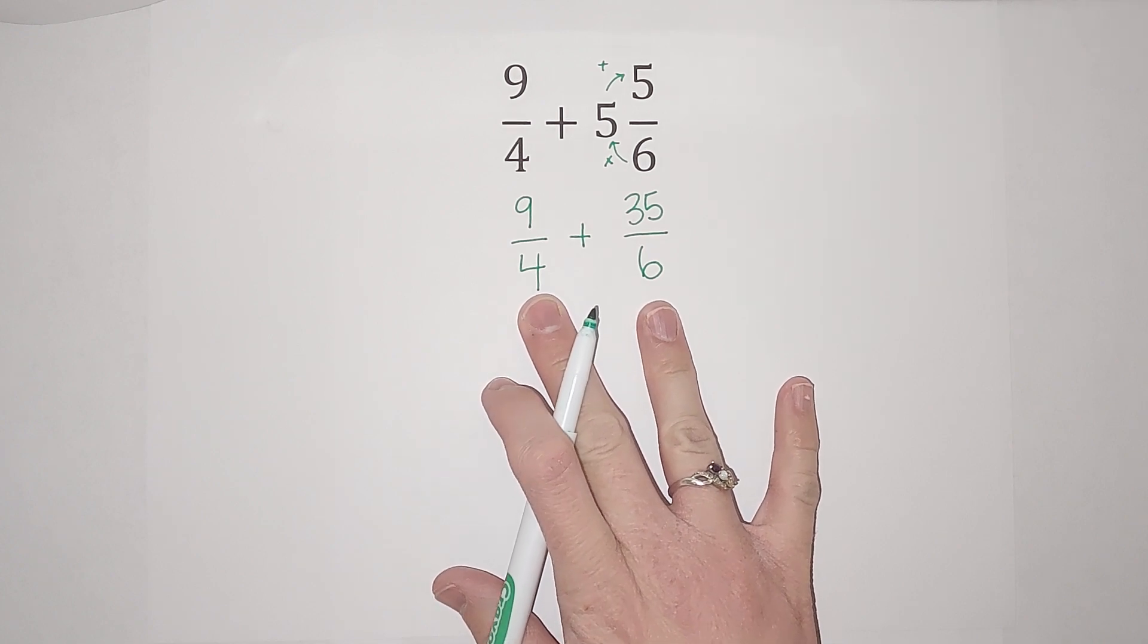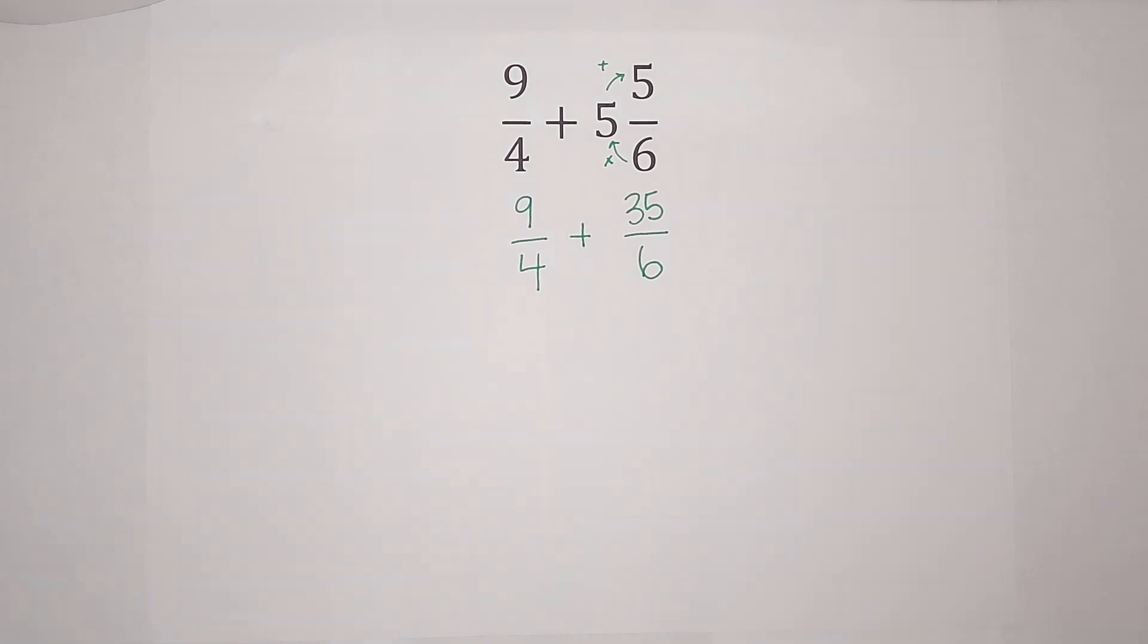If you want to know what happens if we don't get them the same, I'll link a video in the corner. So what I ask myself is what is the smallest number that 4 and 6 both go into? Fancy word for that is the least common multiple, but what is the lowest number they both go into? And that happens to be 12.